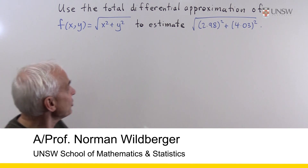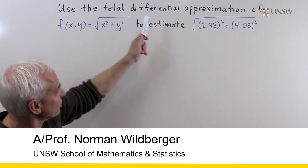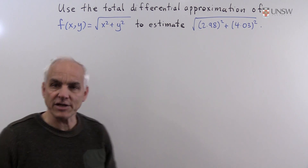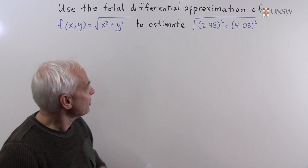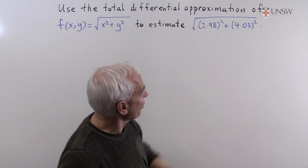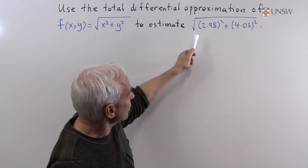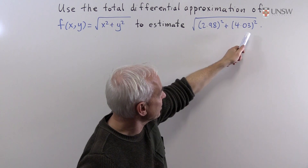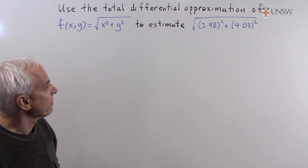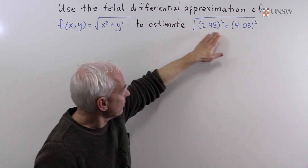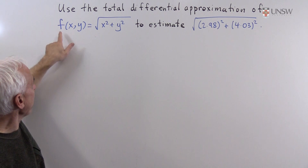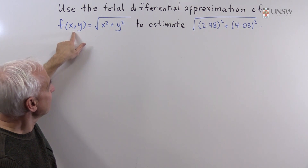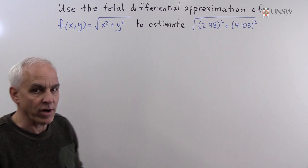In this question we're asked to use the total differential approximation of the function f(x,y) = √(x² + y²) to estimate the value √(2.98² + 4.03²). So we can see that what we're really asked to do is to evaluate f(2.98, 4.03).